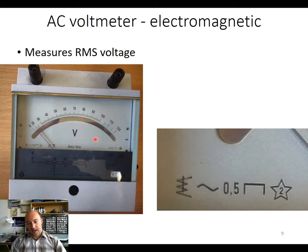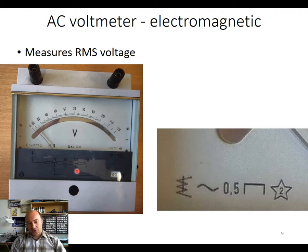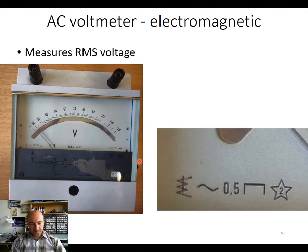This is an AC voltmeter: here you see the symbol for the electromagnetic system, it is an AC instrument, the accuracy class is 0.5, and this is the orientation symbol and test voltage. This particular instrument allows you to change ranges — you can select between 12 volts, 24, 60, and 120 volts — currently 60 volts is selected using the knob on the right-hand side. Remember that this kind of instrument measures the RMS voltage; in today's lab you will see the values obtained with different kinds of voltmeters.